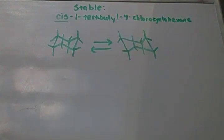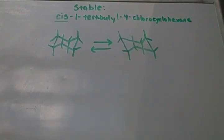So for this question, it asks to draw the more stable conformation of cis-1-tert-butyl-4-chloro-cyclohexane.